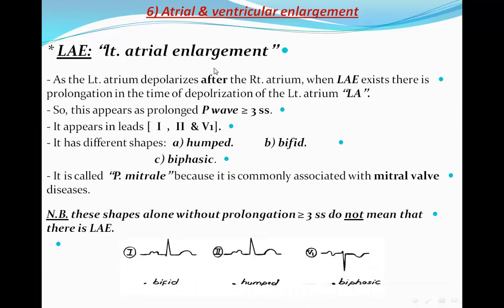Left atrial enlargement: as we know, the SA node first depolarizes the right atrium, then the electrical wave travels through the interatrial system to depolarize the left atrium. Reasonably, if the left atrium becomes enlarged, the duration of depolarization of the atrium will be increased. That's why to diagnose left atrial enlargement, we must have a prolonged P wave of more than three small squares in width. It appears in leads 1, 2, and V1.